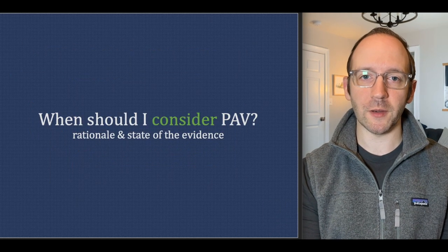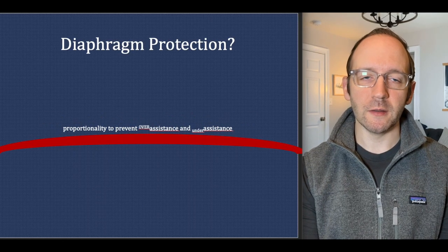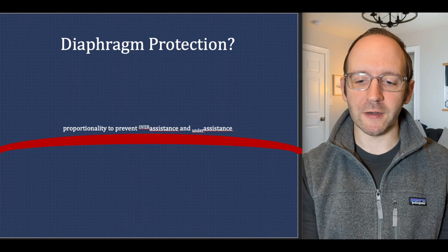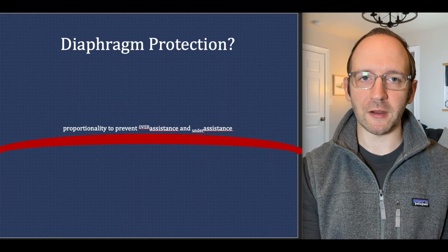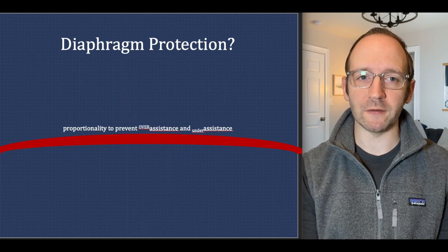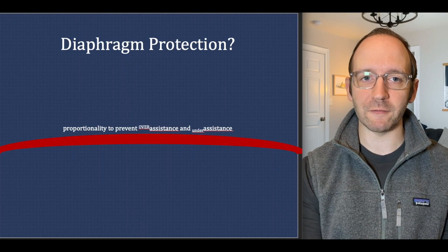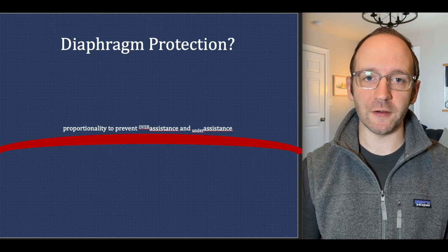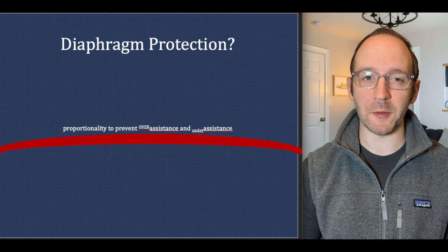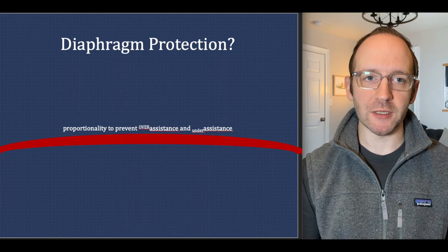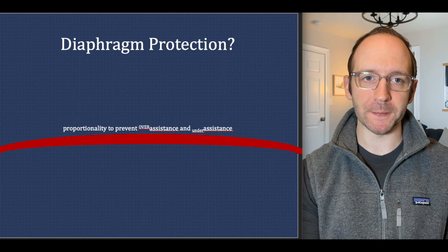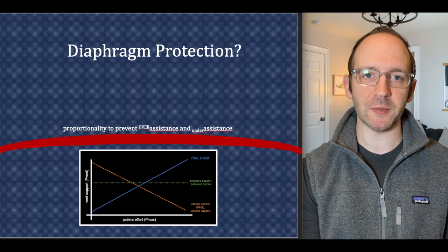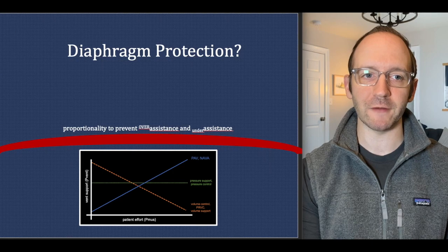Some other ideas on when PAV should be considered: this is something that, at least in theory, could be diaphragm protective. The way we apply mechanical ventilation can cause injury to the diaphragm in two main ways. Number one, over-supporting the diaphragm can lead to atrophy, making it difficult to wean from ventilation. On the other hand, under-assistance can lead to overwork of the diaphragm and pathological muscle growth, which also interferes with diaphragm function. Because of servo targeting, the more effort the patient does, the more vent support they get — making this an appealing possible strategy for diaphragm protection.